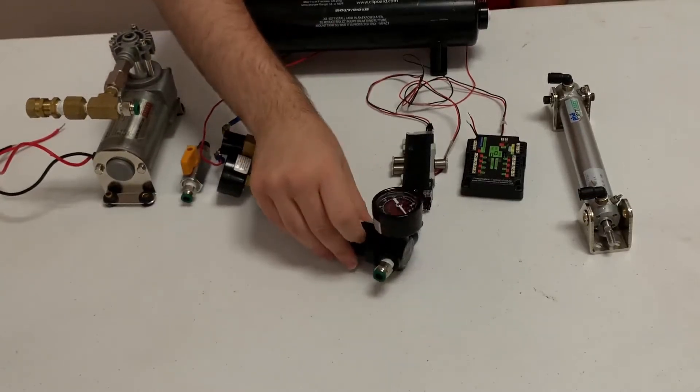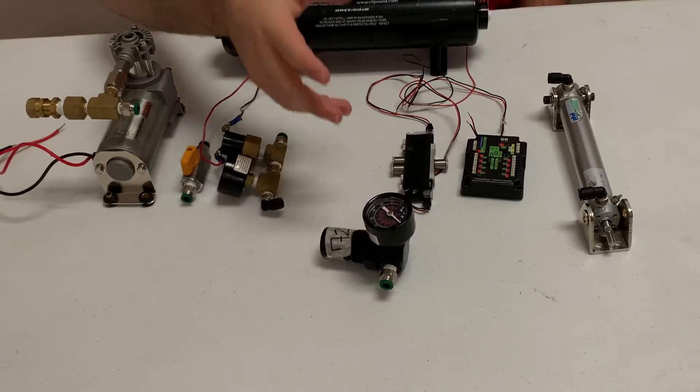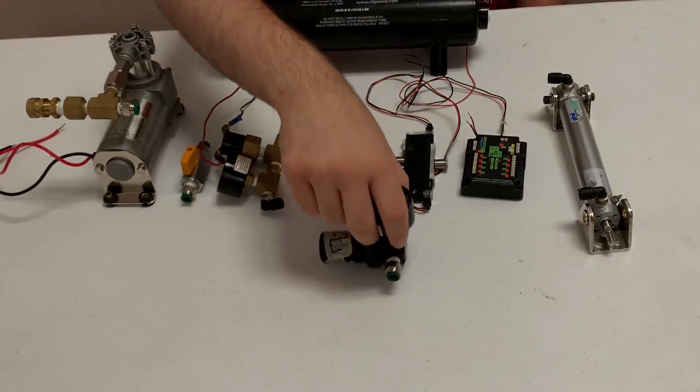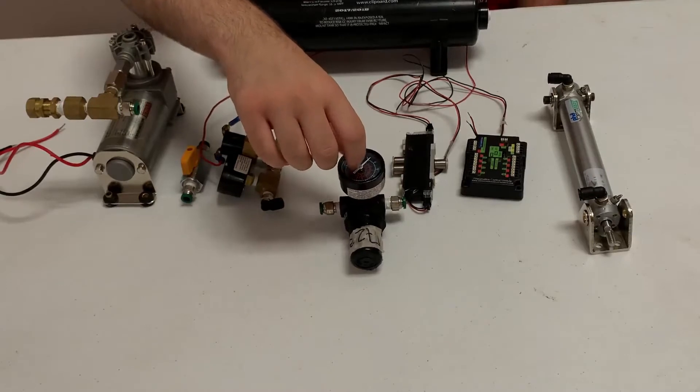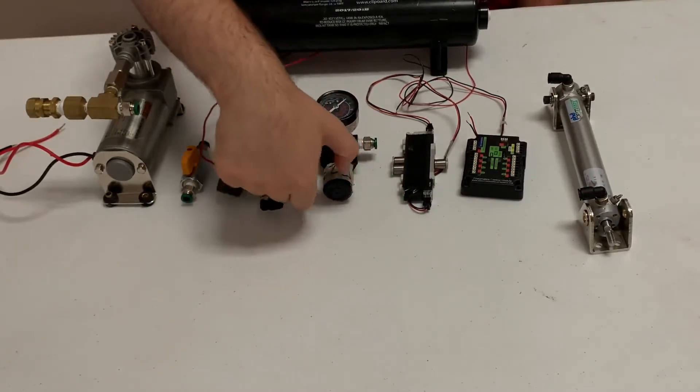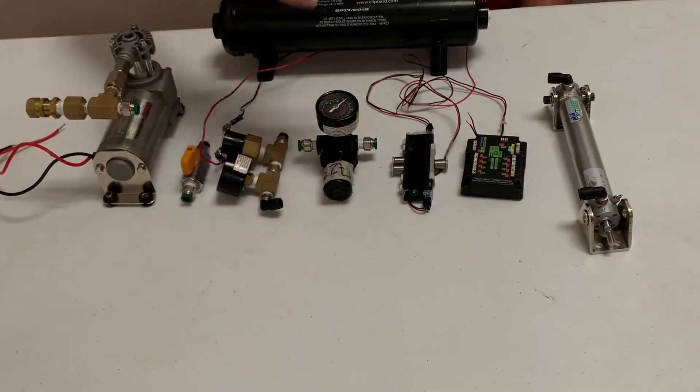Next is our pressure gauge and master pressure switch. Here we can control how much pressure goes into the rest of our system and has a pressure gauge to tell us how much pressure is in our system. With this knob, we can control how much pressure we want, the maximum pressure we want to be allowed in our system.